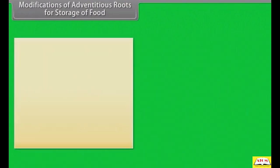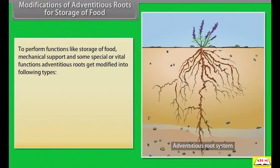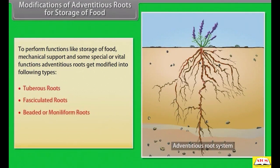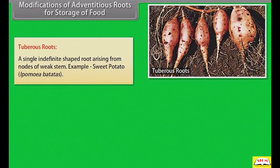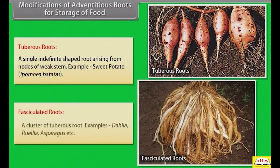Adventitious roots get modified to perform functions like storage of food, mechanical support, and vital functions. Types include tuberous roots, fasciculated roots, beaded or moniliform roots, nodulated roots, and anulated roots. Tuberous root: a single indefinitely shaped root arising from nodes of a weak stem. Example: sweet potato. Fasciculated roots: a cluster of tuberous roots. Examples: dahlia, Ruellia, asparagus.